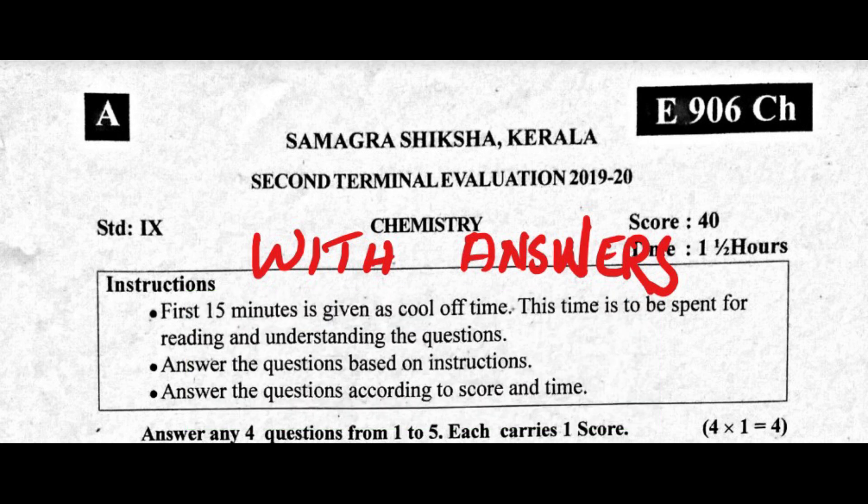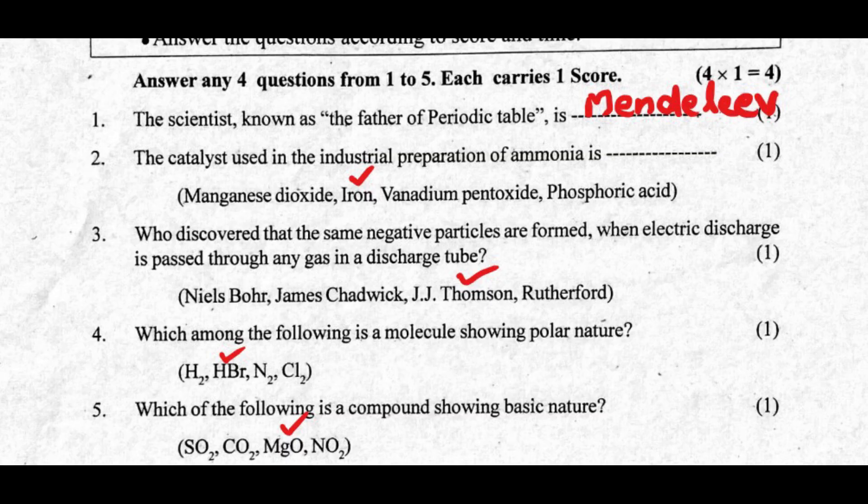The first question: the scientist known as the father of the periodic table is Mendeleev.